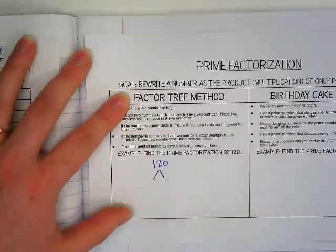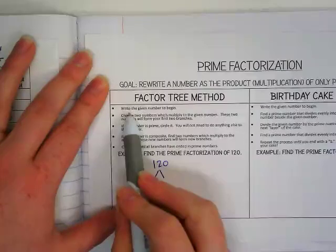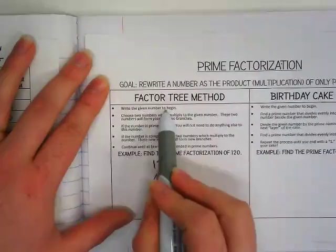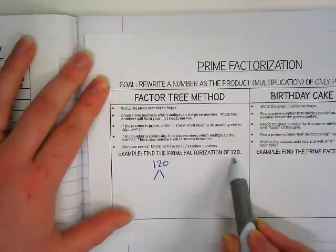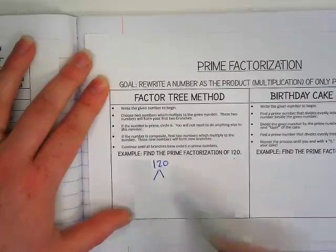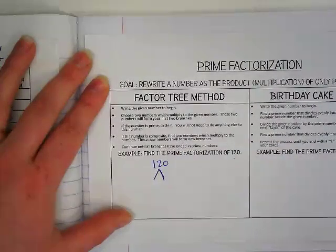So we're going to look at how they do it. Write the given number to begin. In our example, we're going to find the prime factorization of 120, so I wrote down 120. Choose two numbers which multiply to the given number.